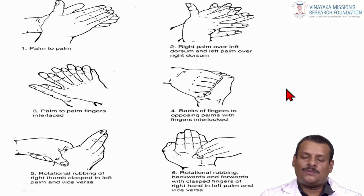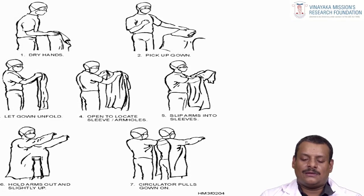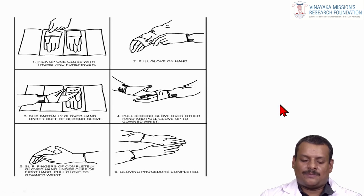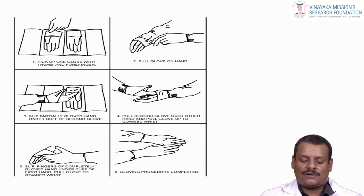A minimum hand washing time of 30 to 45 seconds should be maintained. After washing, hands are dried and the sterile gown is picked up, allowed to unfold, and the arms are slipped into the sleeves and held out slightly up while the circulator helps pull the gown back and fastens the straps. For gloving, one glove is picked up with thumb and forefinger and pulled onto the hand; the partially gloved hand slips under the cuff of the second glove, pulls it over the other hand up to the gown wrist, then the fingers of the gloved hand pull the first glove up to the gown wrist. The gloving procedure is thus completed.